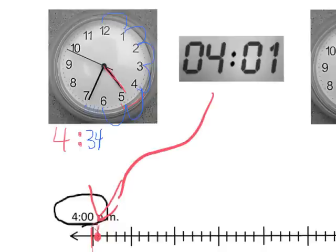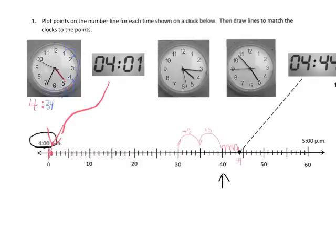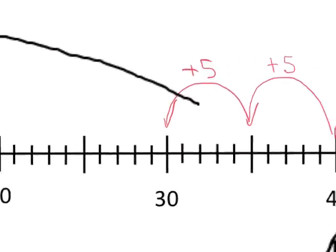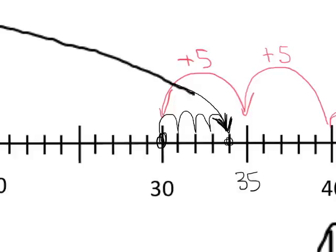So now we have to label that on our number line. So 4:34 — I'll use the black ink this time. 4:34 is going to be in this direction, and then we're going to zoom in a little bit. Here's 4:30, and this guy right here would be 4:35. So 4:34 means we need to go right here because this is 4:30, and then 31, 32, 33, 34 — so that's where 4:34 would be.